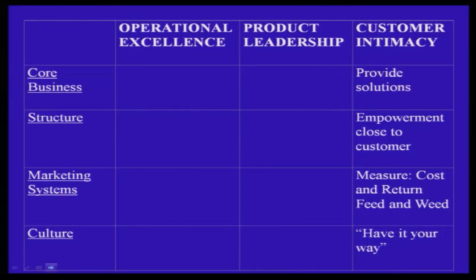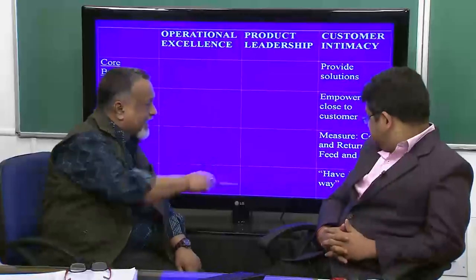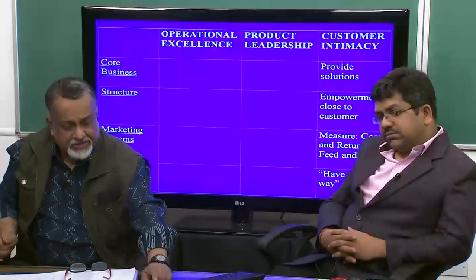The marketing system at the customer intimacy stage focuses on cost and return but also on feed and weed — deciding which products and which customers to focus on, and some will have to be left out. The key point here is 'have it your way' — power is very much in the hands of the customer.